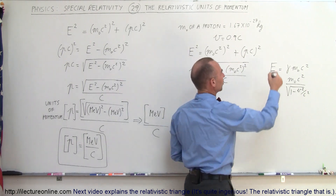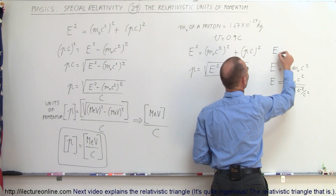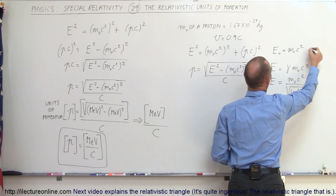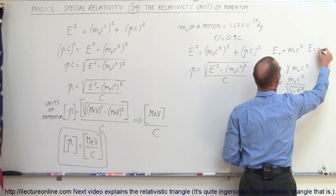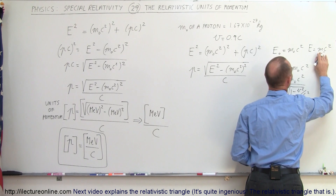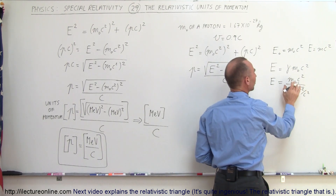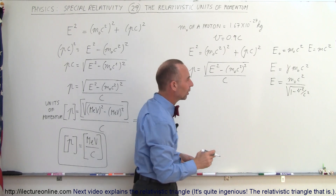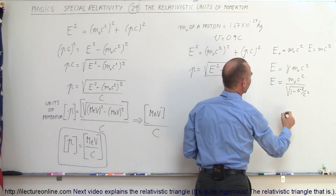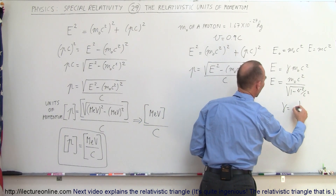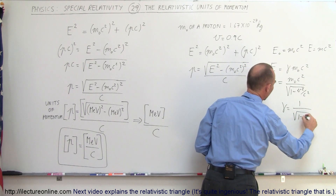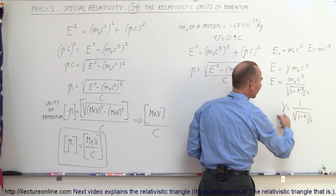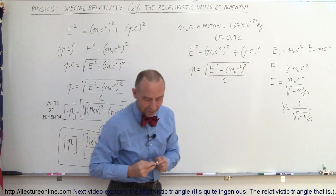For reference: rest mass energy is equal to M-sub-naught C squared, and total energy can be written as MC squared, where M is now the relativistic mass — the rest mass divided by the square root of 1 minus V squared over C squared — which can be written as gamma. Since we know V, we can figure out what gamma is equal to.